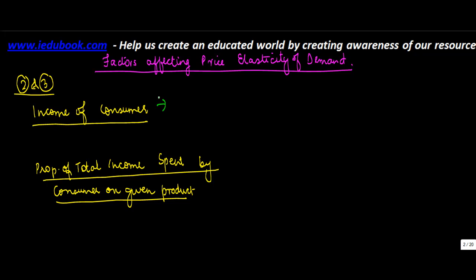Let us consider them one by one. Income of the consumer. Now let us take the case of two individuals X and Y. Let us say their incomes are 1 million and 10 million respectively.